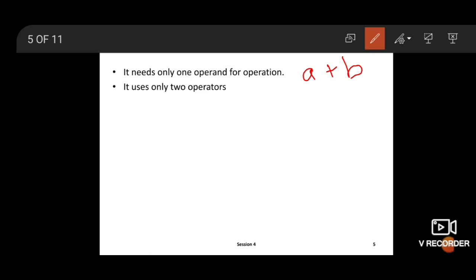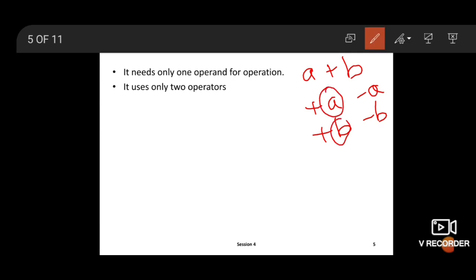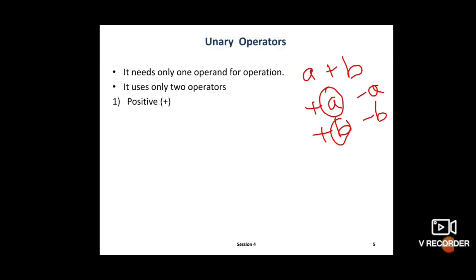In unary operators, only one operand is needed. Only two symbols are used in unary operators: first one is positive (+) and second one is negative (-). These are the only two symbols used in unary arithmetic operators.